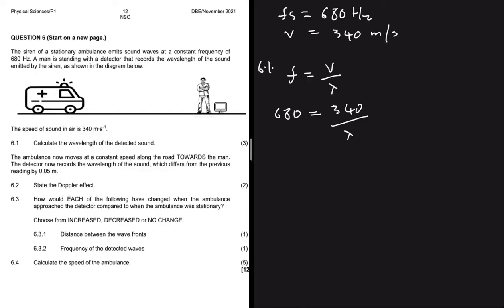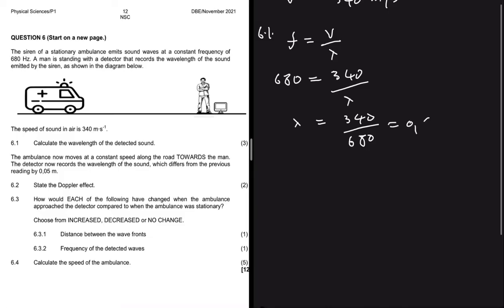From here we just cross-multiply to get our wavelength. So wavelength equals 340 divided by 680 hertz, which gives 0.5 meters. So the wavelength of our detected sound is 0.5 meters.